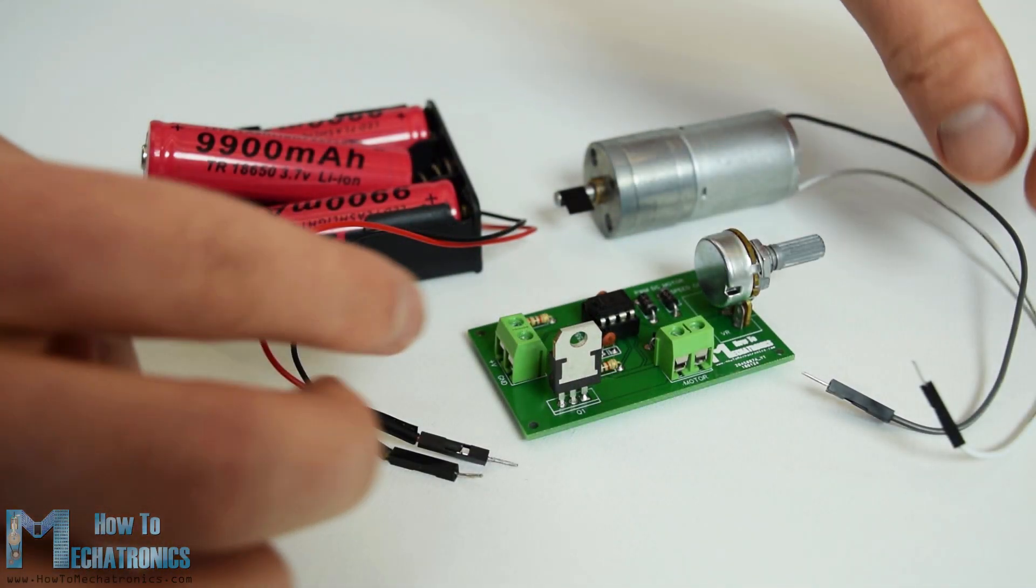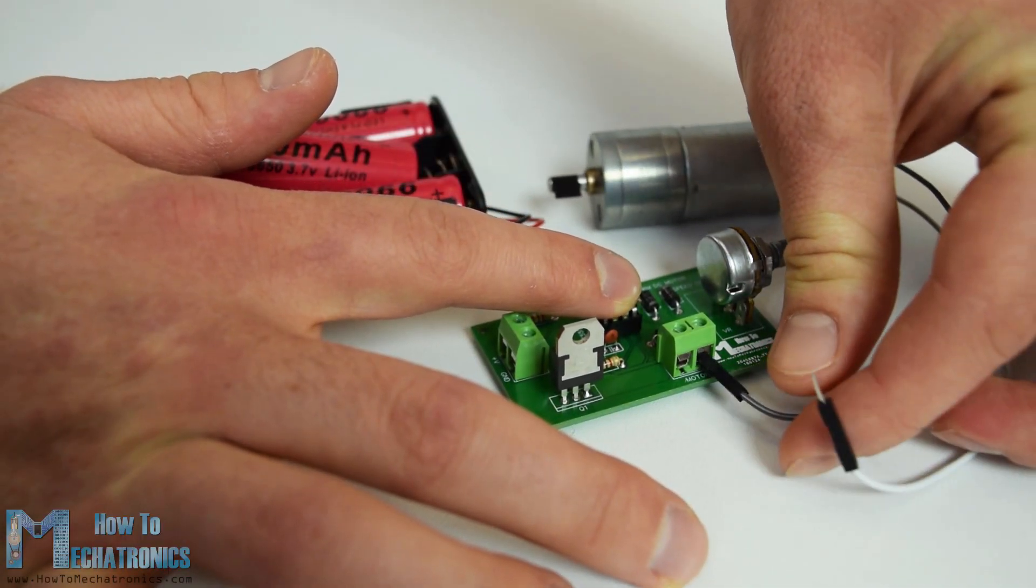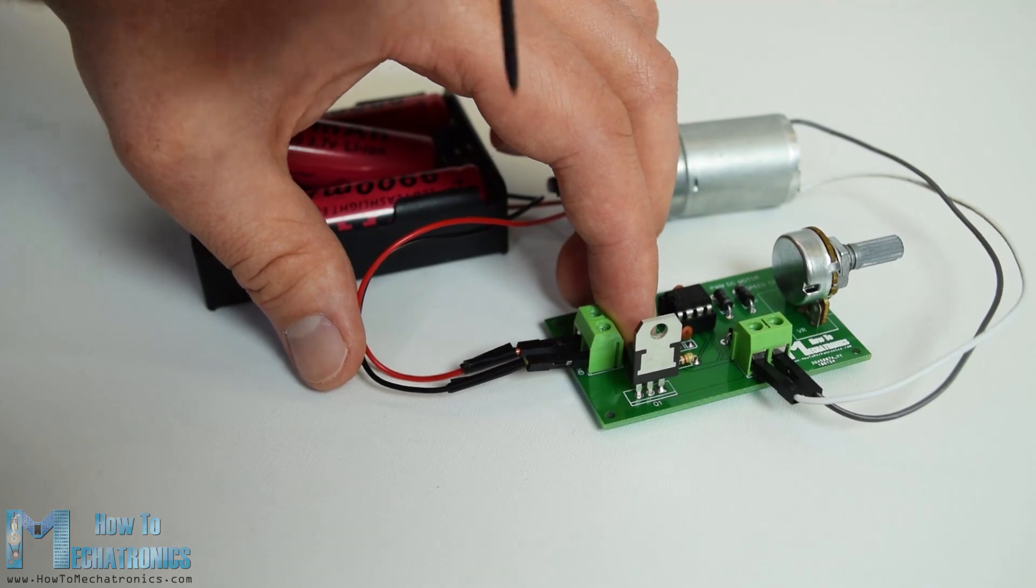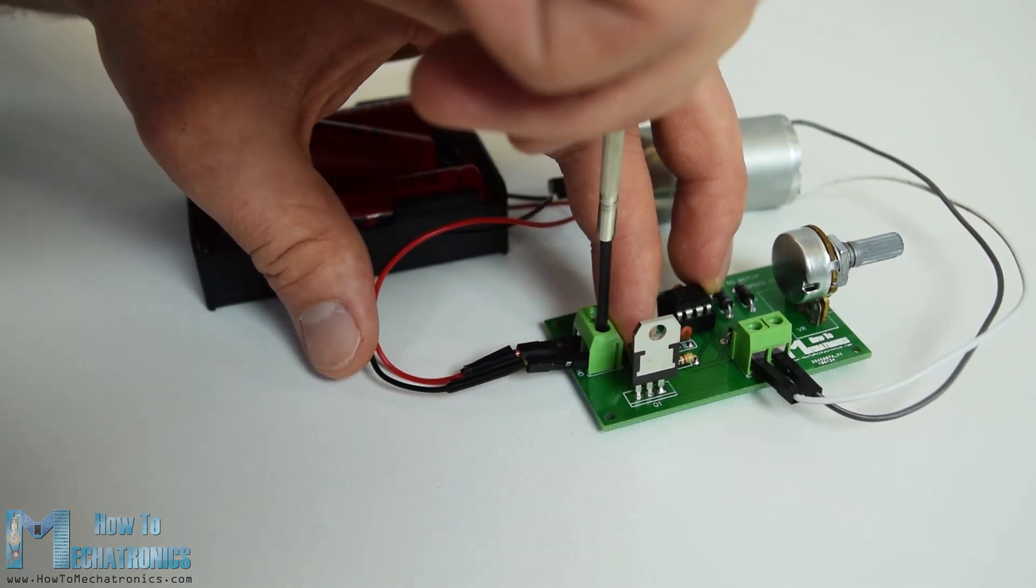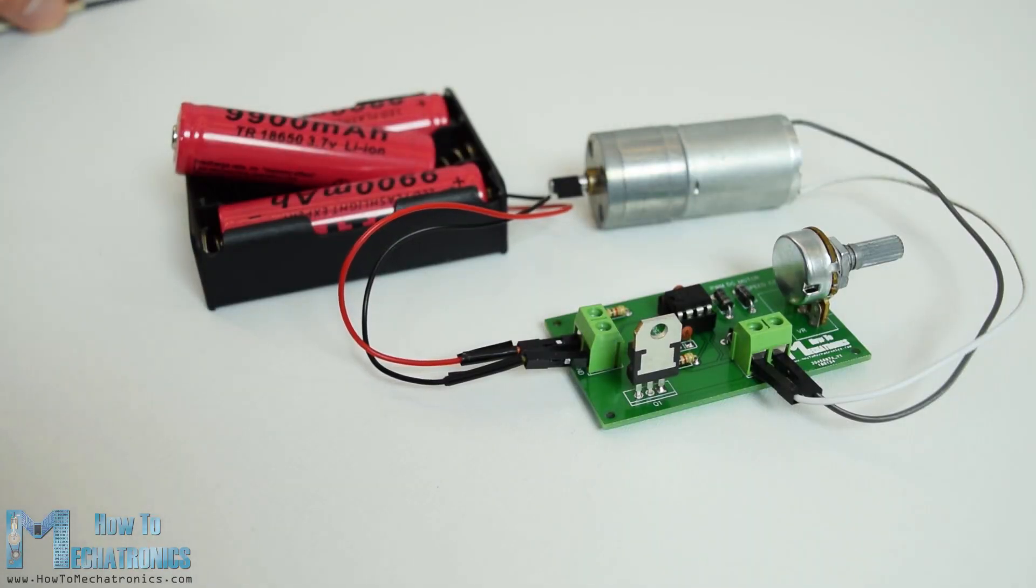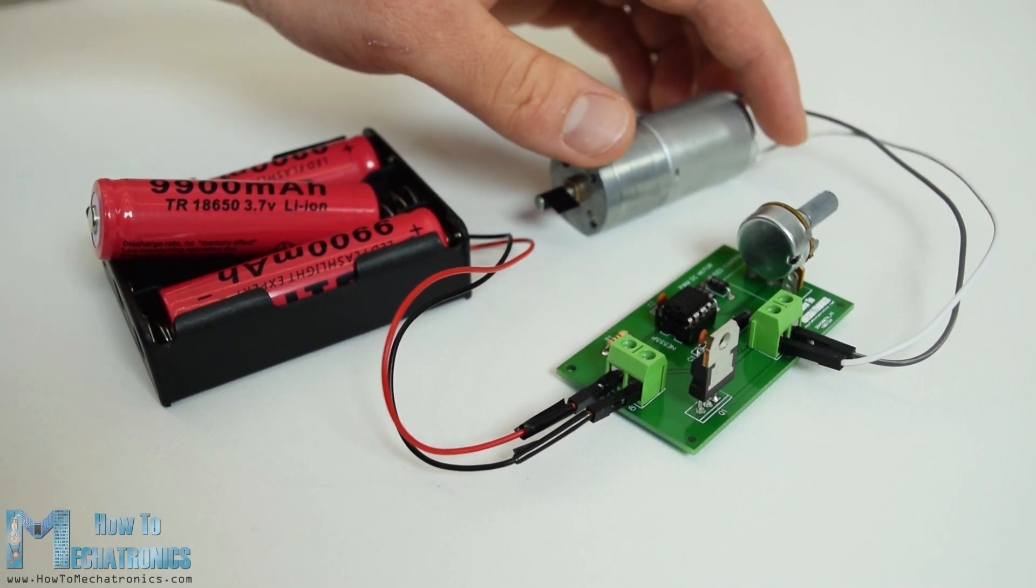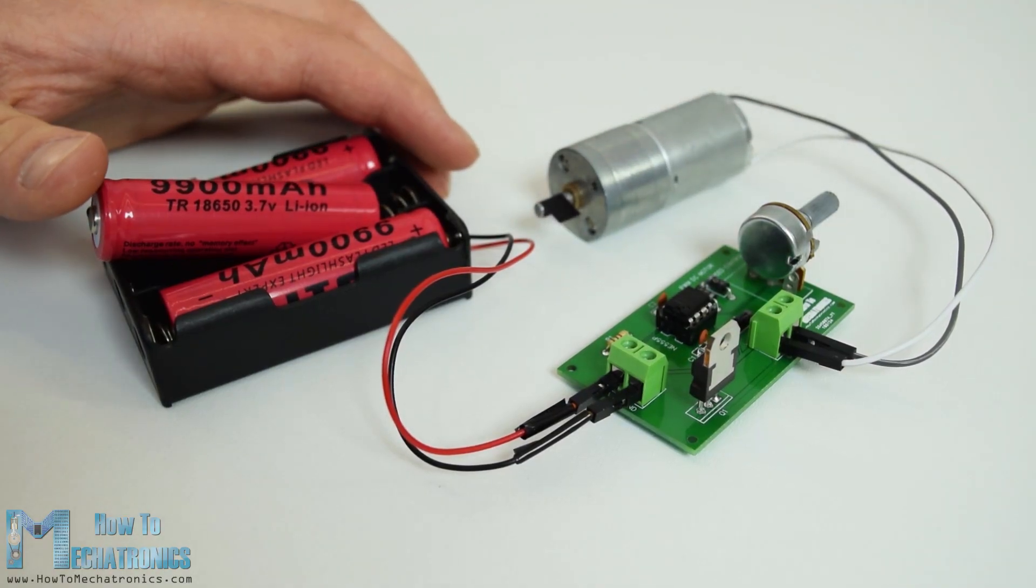Here's the final appearance of the board and what's left now is to connect a DC motor and a suitable power supply for it. I used a 12V high-torque DC motor which I powered using three 3.7V lithium-ion batteries connected in series, which gives around 12V.